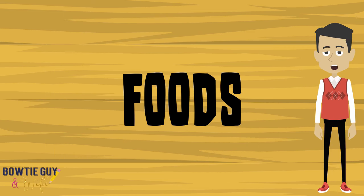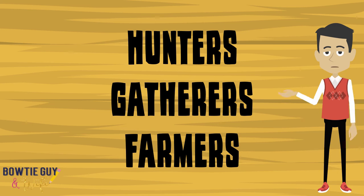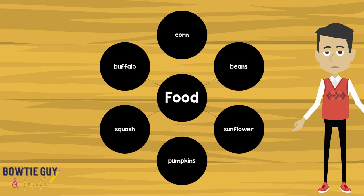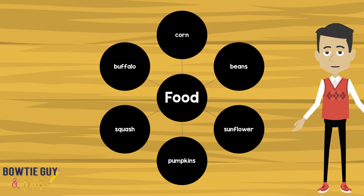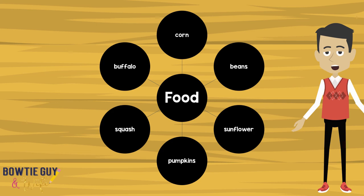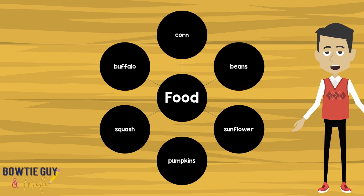What kind of foods did the American Indians of the Plains eat? They were hunters, farmers, and gatherers. When they hunted, they hunted buffalo, deer, elk, bear, antelope, prairie dogs, wolves, and turkey. When they farmed, they grew corn, beans, sunflower, pumpkins, and sometimes squash. And they gathered berries, nuts, bulbs, and seeds.